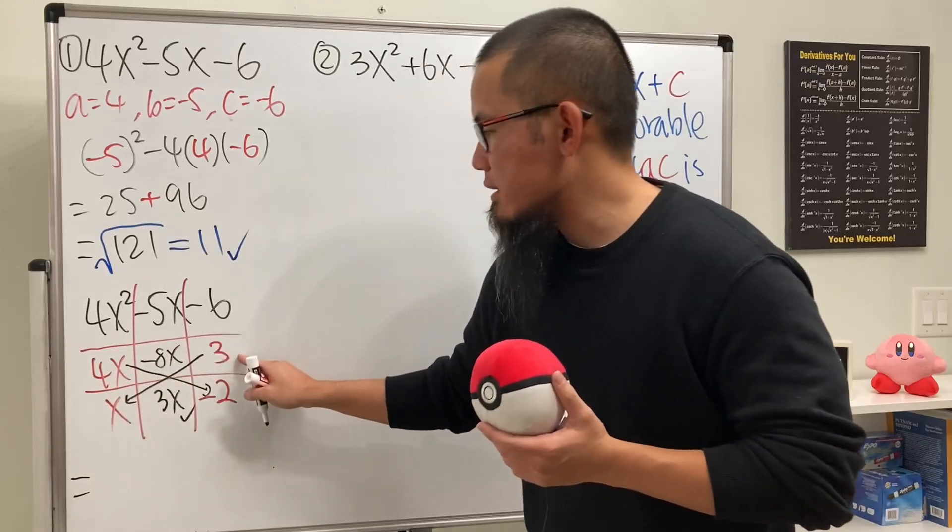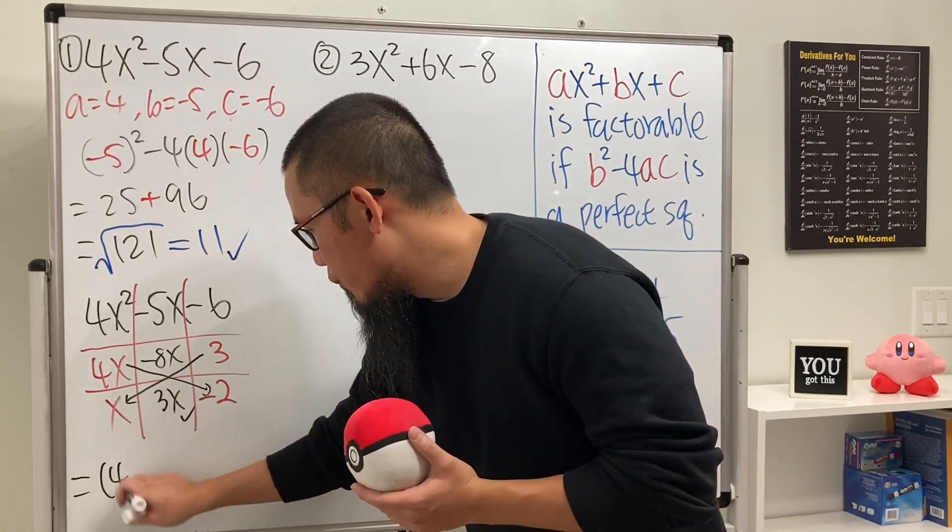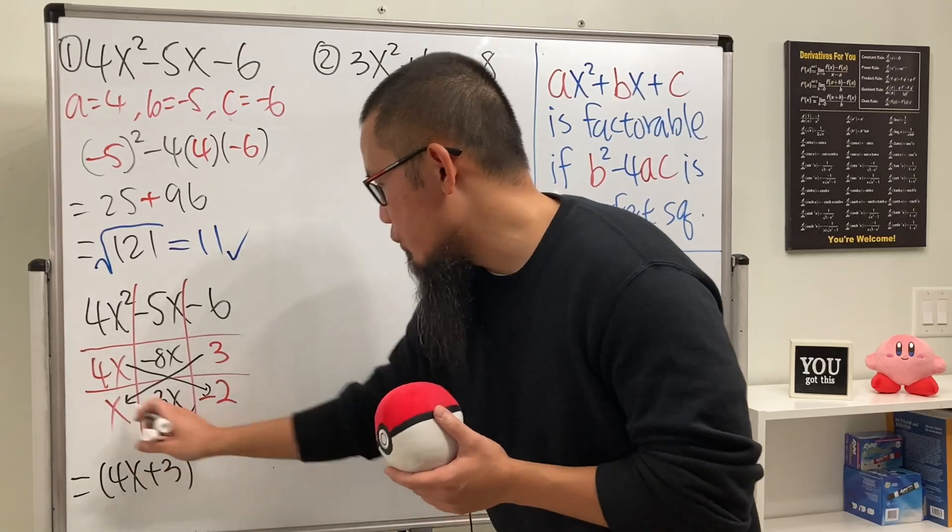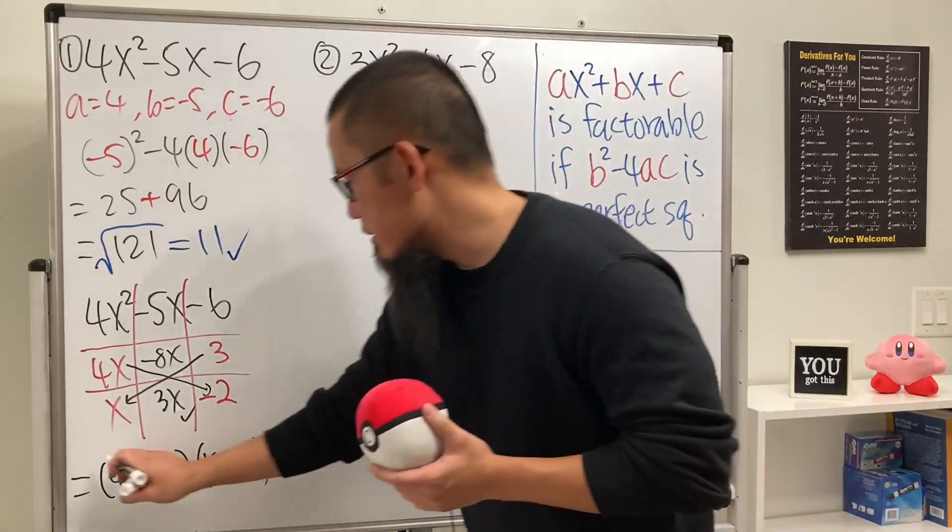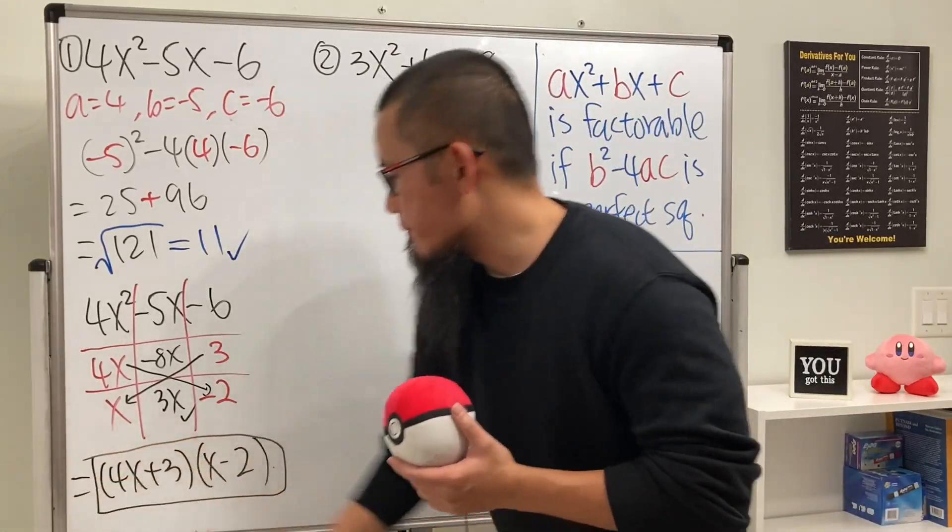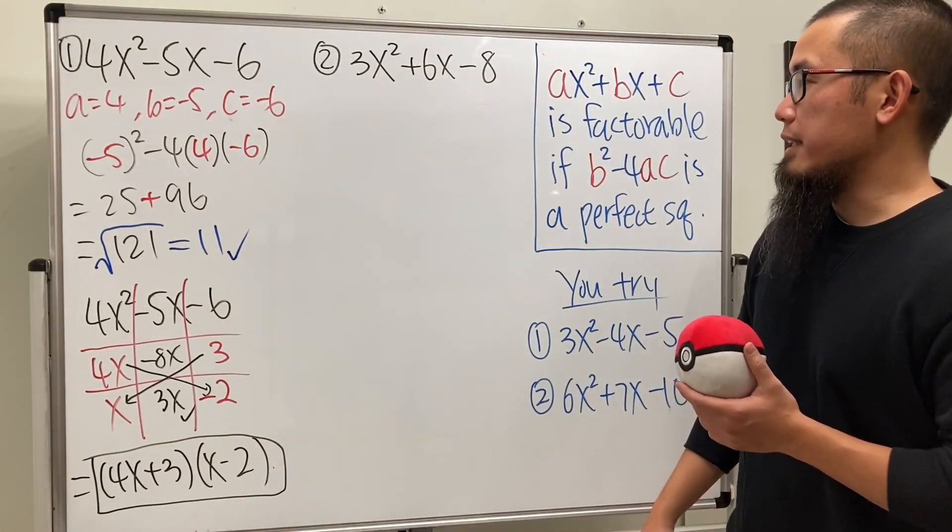And to write down the answer, you are going to read it across. So the first factor is 4x + 3, and the second one is x - 2. Of course, the order of the parentheses, the factors, they don't matter, right? Yeah, so we'll just leave it like that. That's it.